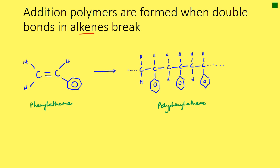The benzene ring goes down here and that is the other part to the double bond, which joins to the next monomer. This double bond breaks in the same way and opens up to bond to the next monomer, and that double bond is broken, and so on. And so this is our polymer and it's called polyphenyl ethene.